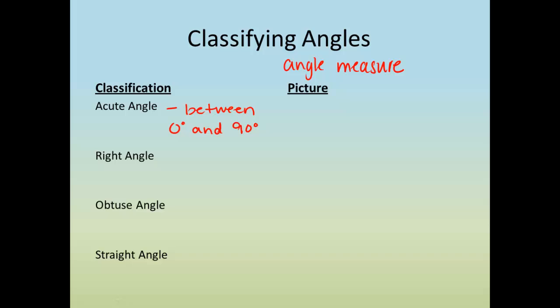Now it's between that because as soon as we are exactly 90 degrees, we're talking about a right angle. An obtuse angle is between 90 degrees and 180 degrees. Again, it's not going to be equal to 90 degrees because that's a right angle, and it's not going to be equal to 180 degrees. It's going to be between them. And the reason it can't be equal to 180 is because a straight angle is exactly 180 degrees.